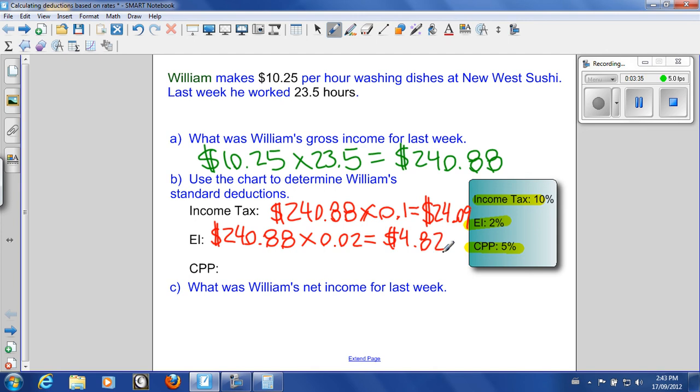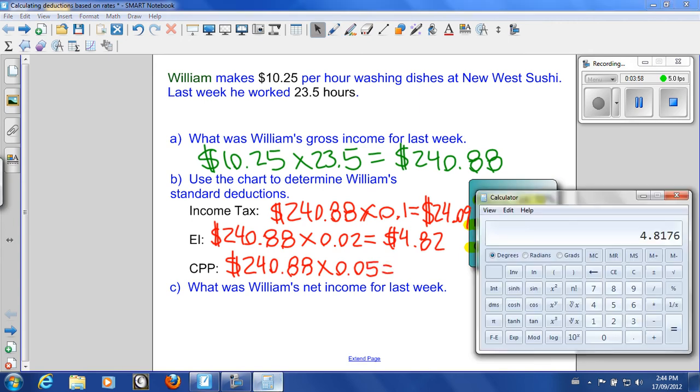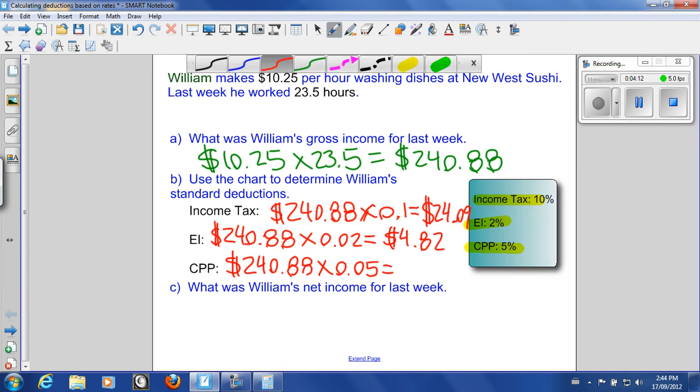Now for CPP. This is 5%. So $240.88 times 0.05 gives us $12.04.